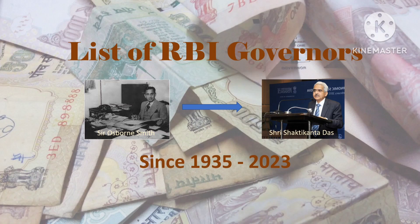The content displayed in this video is taken from RBI's official website itself. When you open the website, go to About Us, then RBI History. On the left side you will find two things: milestone and miscellany. Click on miscellany and you will get the list of governors along with a small description about them.